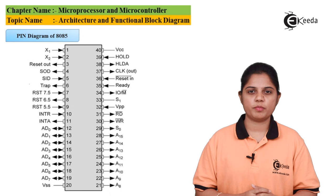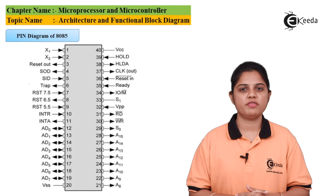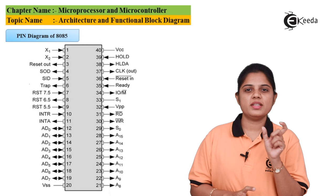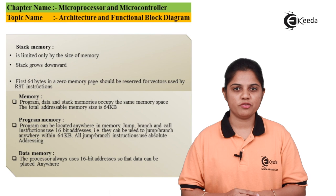The 8085 has VCC and VSS pins. It requires a single 5V supply given to VCC and works on a clock frequency of 3.2 MHz. A single clock phase supply is given and on that the operation takes place. As seen in the pin diagram, it requires a plus 5V single supply and works on a 3.2 MHz clock frequency.